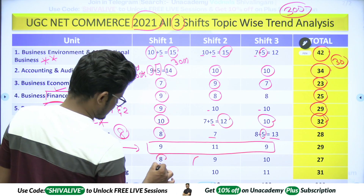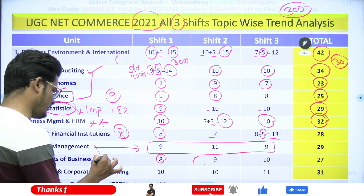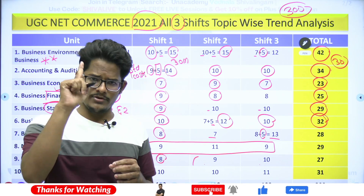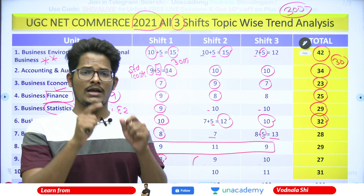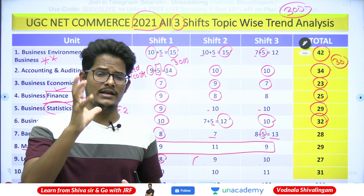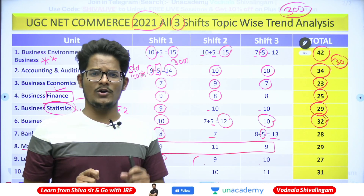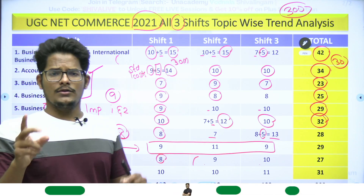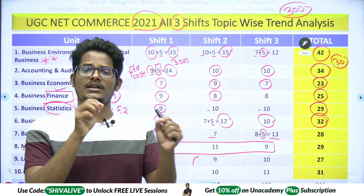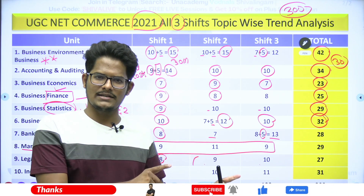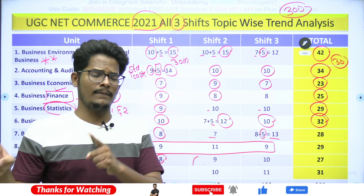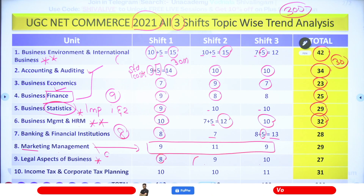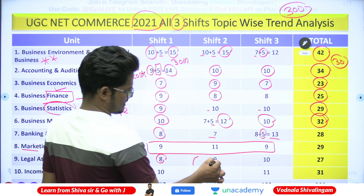Legal Aspects of Business saw 8, 9, and 10 questions across shifts respectively. Contract Act had 2-3 questions asked; GST was also asked; Negotiable Instruments Act — 1 question; Sale of Goods Act — 1 question; IPR (Intellectual Property Rights) — 2-3 questions. Most important acts this time were IPR and Competition Act, given more importance than usual. You must cover penalties and contraventions in every act — Contract Act, IPR, Competition Act, Consumer Protection Act — as these are frequently tested.